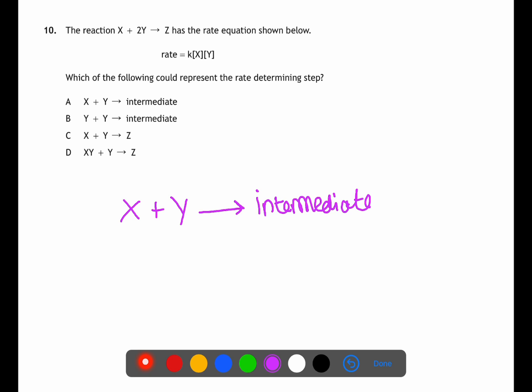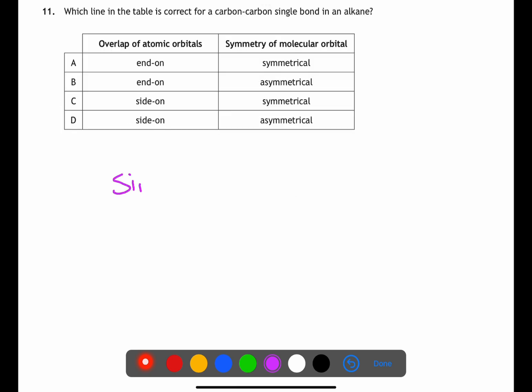For question 11 we're looking at carbon to carbon single bonds. A carbon to carbon single bond is always a sigma bond and a sigma bond is formed by end-on overlap of orbitals. We can eliminate C and D. The symmetry of the molecular orbital is symmetrical therefore A is the answer.